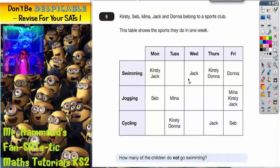So just to double check what the table actually means, this square here, if we read all the way across, it shows swimming. So Jack goes swimming and if we read to the top, it says Wednesday.